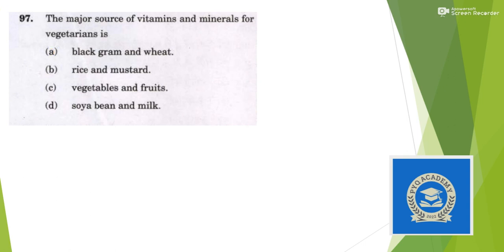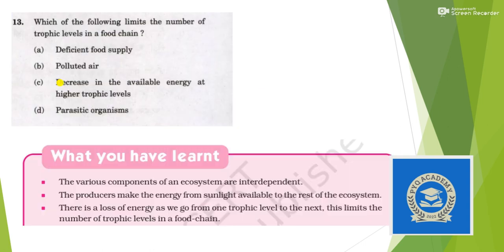Next: the major source of vitamins and minerals for vegetarians is? The major source of vitamins and minerals is vegetables and fruits. So the answer is option C. Next: which one of the following limits the number of trophic levels in a food chain? There is a loss of energy as we go from one trophic level to the next — this limits the number of trophic levels. So decrease in available energy at higher trophic levels is our answer.